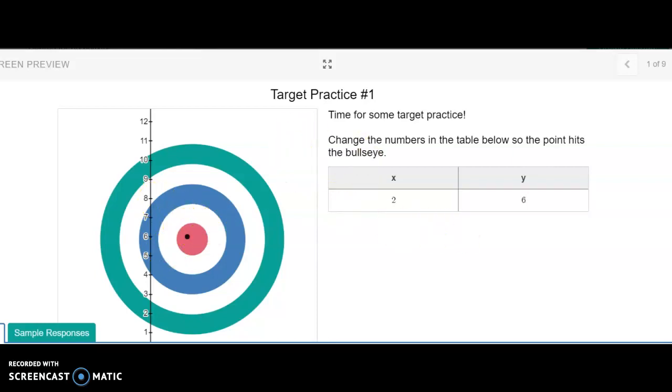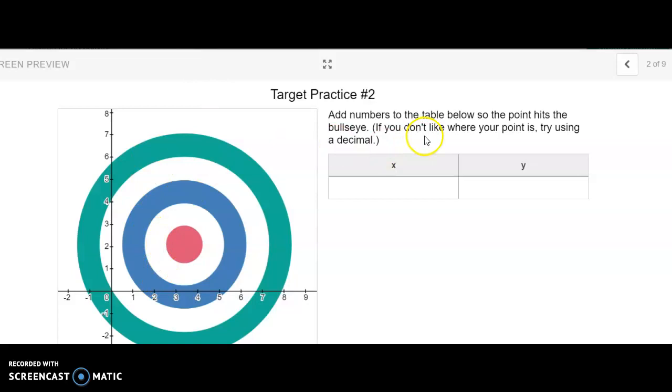Then you will hit next and go on to the next one. Now you want to hit this bullseye, and there's no dot to move, so you will insert your own values. So if I do x is nine, y is two, I'm way over there.